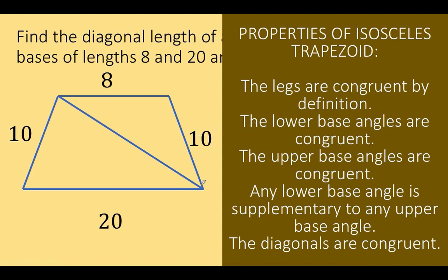Second, the lower base angles are congruent — this is a lower base angle and this is also another lower base angle, and these two angles are congruent. Next, the upper base angles are also congruent — this is an upper base angle and this is an upper base angle, and these two angles are also congruent. Third, any lower base angle is supplementary to any upper base angle. The sum of these two angles must be equal to 180 degrees. This lower base angle and this upper base angle at the opposite side are also supplementary.